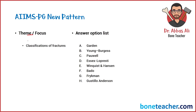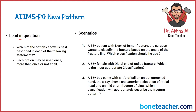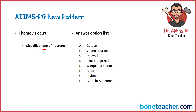The theme of the question will talk about a particular thing that they are focusing on — for example, here they are talking about classifications of fractures. Then there will be an option list which will have approximately eight options, as given in the prospectus. There will be a lead-in question which will tell you what they are specifically asking about. Followed by that, there will be scenarios — clinical vignettes with appropriate images, labs, or whatever they want. At the end of each scenario, a question will be asked for which the answer should be collected from the provided option list.